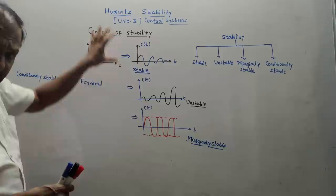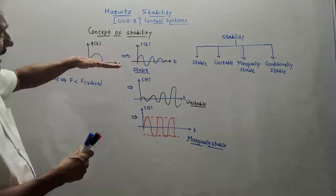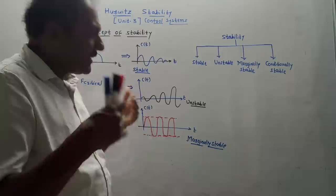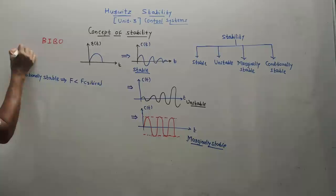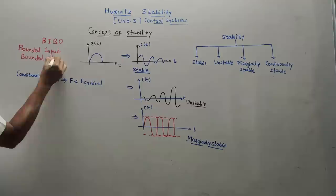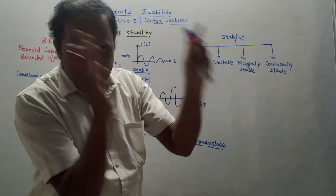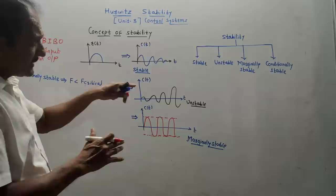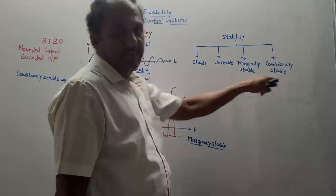First we will discuss the concept of stability. As far as this unit is concerned, more stress is on numericals but a few theory parts can be expected. If a theory question is asked on this topic, the question can be: what are the different types of stability? As we studied in signals and systems, recall the term BIBO stable — that is bounded input bounded output stability. As far as stability is concerned, there are four types: stable system, unstable system, marginally stable system, and conditionally stable system.